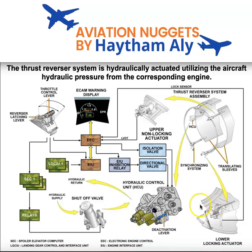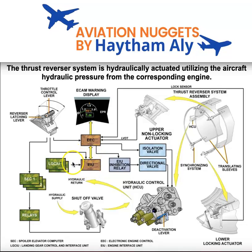EEC stands for electronic engine control — the heart of the FADEC engine computer. EIU is the engine interface unit. SEC is the spoiler elevator computer. LGCIU is the landing gear control and interface unit. The EIU checks from the LGCIU that the aircraft is on ground, and the SEC checks from the radio altimeter — through the LGCIU — that the aircraft is less than 10 feet above ground.